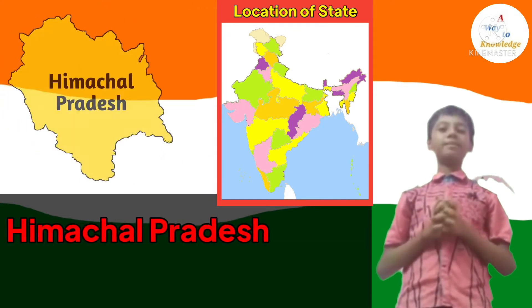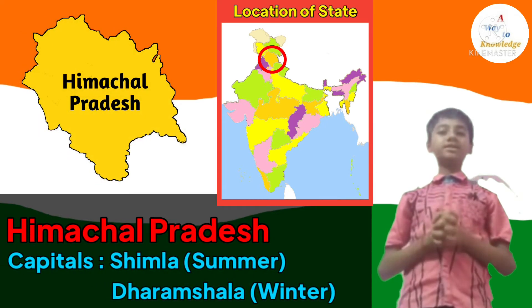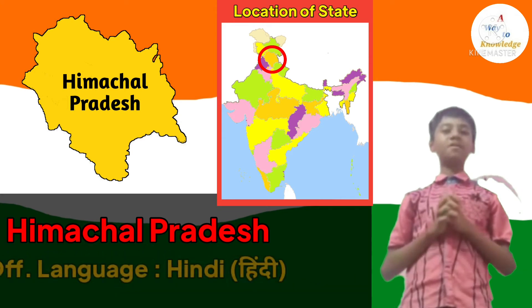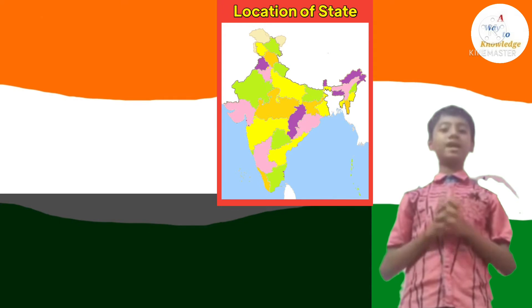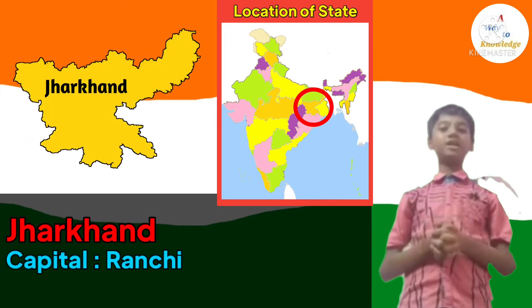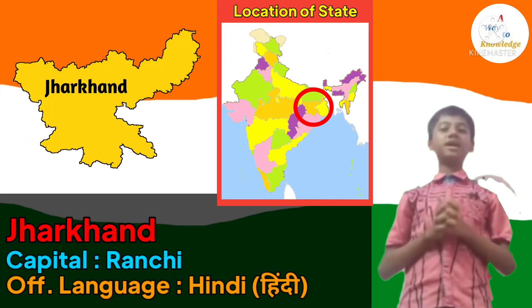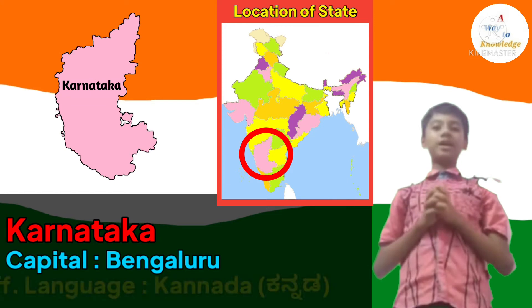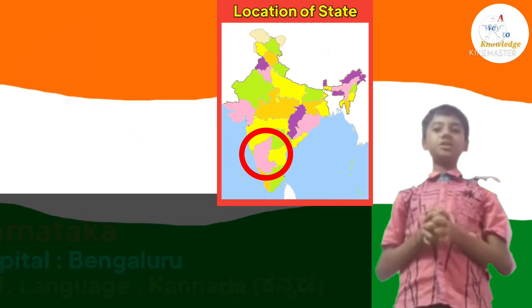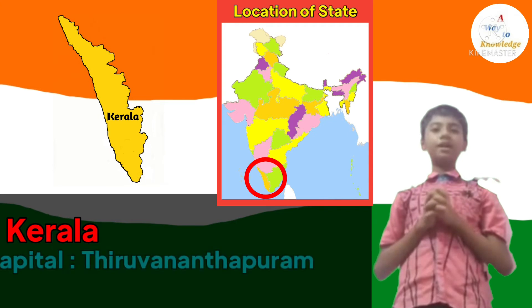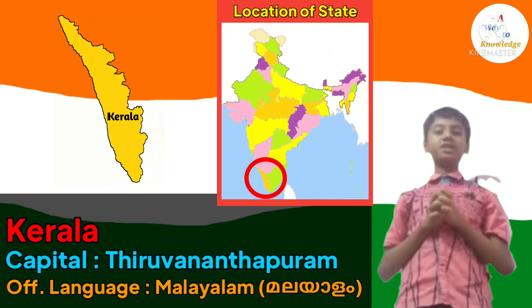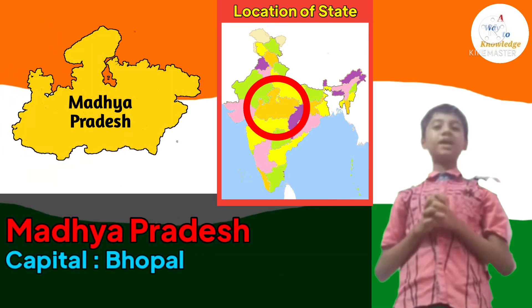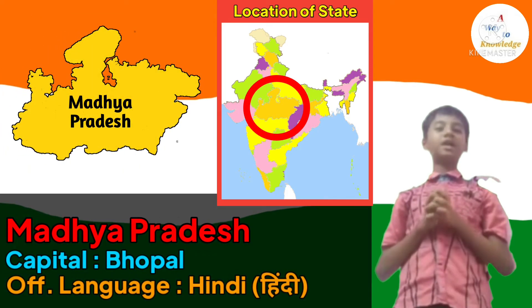State number 9: Himachal Pradesh. It has two capitals — Shimla is the summer capital and Dharamsala is the winter capital. Its official language is Hindi. State number 10: Jharkhand. Its capital is Ranchi and its official language is Hindi. State number 11: Karnataka. Its capital is Bengaluru and Kannada is its official language. State number 12: Kerala. Its capital is Thiruvananthapuram and its official language is Malayalam. State number 13: Madhya Pradesh. Its capital is Bhopal and its official language is Hindi.